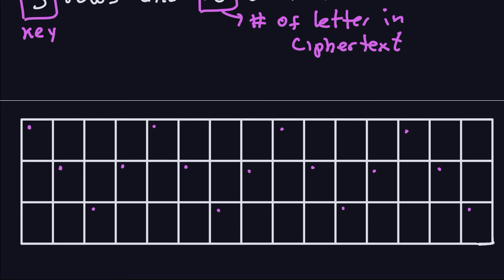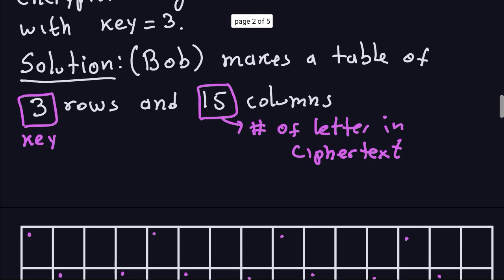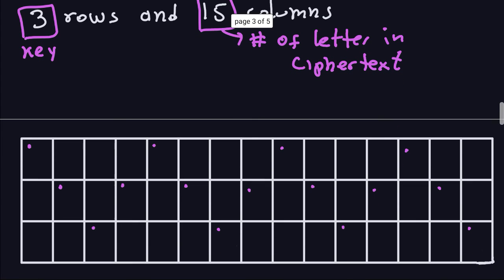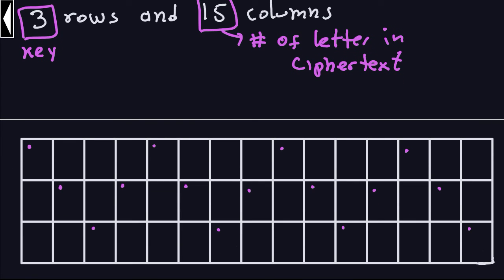Now he knows the positions in the first row. He counts and finds there are four letters in the first row from the cipher text. So what letters are those? They are M, M, T, and A. Those four letters go in the first row. He knows this because he knows the position of the letters and can count how many go in the first row. So M, M, T, A is placed in the first row.